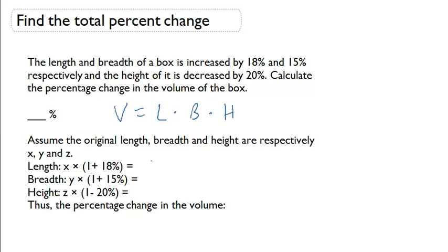That means the length, if it's increased by 18%, will be X times 1 plus 18%. For my breadth, I have an increase of 15%, so that means I'm going to have my Y times 1 plus 15%. And lastly, I have a decrease in the height of 20%. This means now I'm going to have to subtract. So it's going to be Z times 1 minus 20%. So for length and breadth, notice that I added to show increases. And for height, I subtracted to show the decrease.